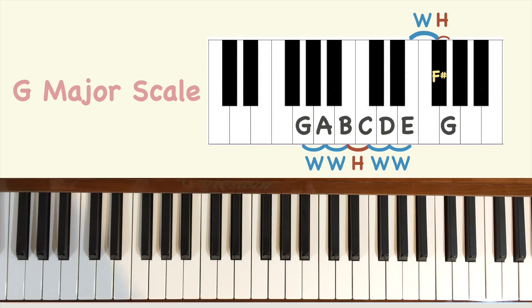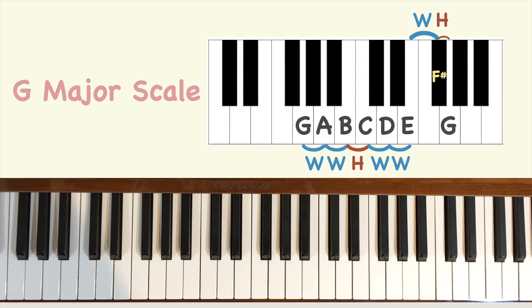You may wonder why we call the second last note F sharp but not Gb. In this beginner piano lesson, I'm not explaining it in detail. But the simple explanation is, if we call it Gb, there would be no F of any kind in this major scale. To make sure that the musical alphabet F would not be missing, we call it F sharp instead of Gb.